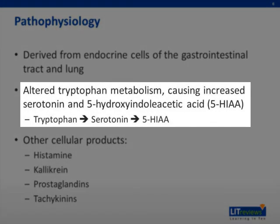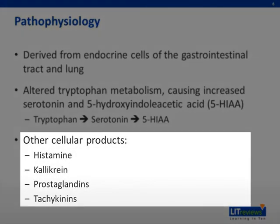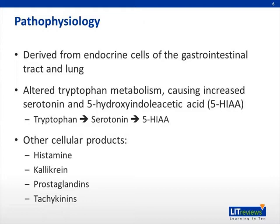In a patient who has carcinoid, there is an altered tryptophan metabolism and subsequently there is increased serotonin and 5-HIAA. These tumors can also lead to the production of histamine, calcitonin, prostaglandins, and tachykinins — all of which are the primary contributors to the flushing and diarrhea commonly associated with carcinoid. As shown in the slide, the pathway of tryptophan metabolism goes: tryptophan is metabolized into serotonin, which is then metabolized into 5-hydroxyindoleacetic acid, or 5-HIAA.